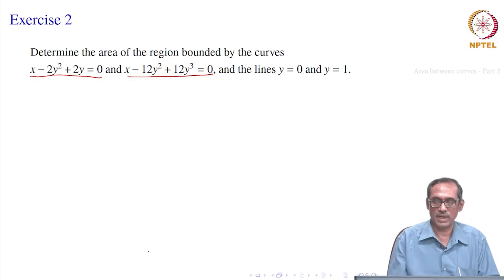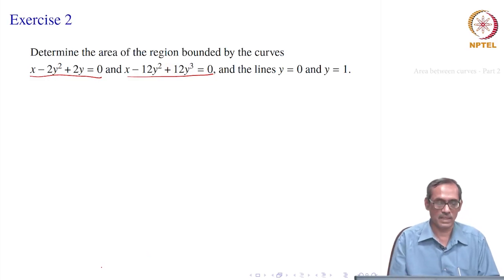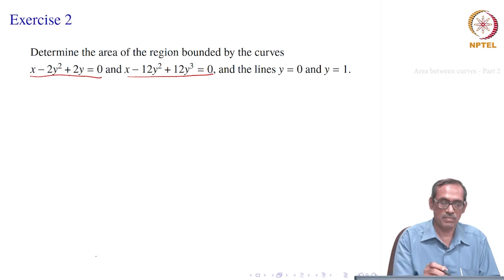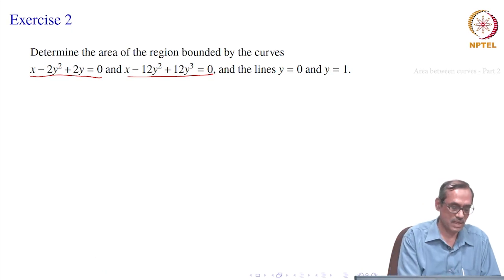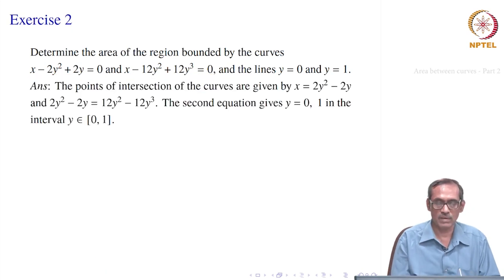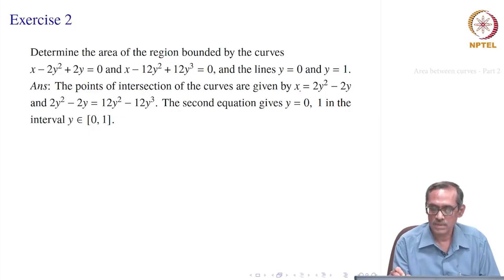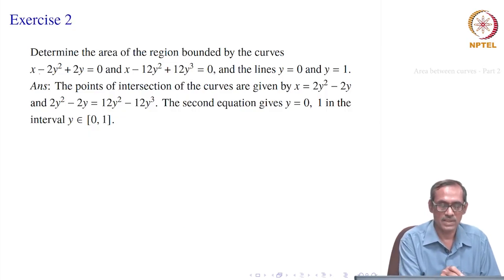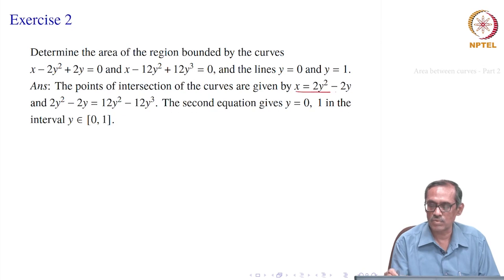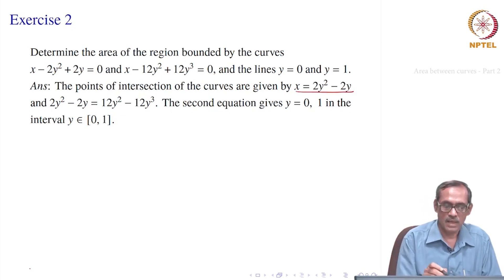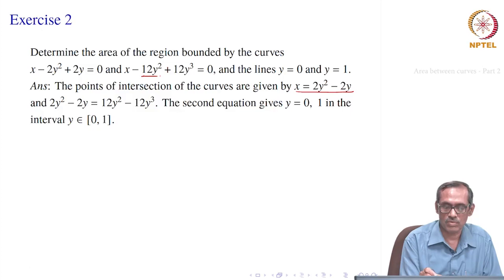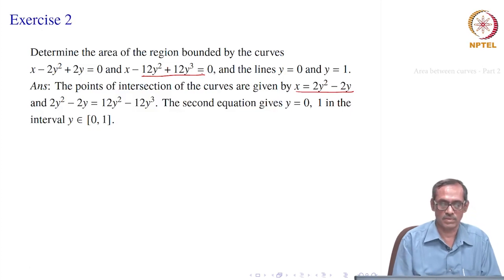It may look something like what we started with in the beginning, but we have to first see how the curves look and whether the points of intersection are exactly two or something else. So let us find the points of intersection. The first curve we can write as x = 2y² - 2y, and the second as x = 12y² - 12y³.